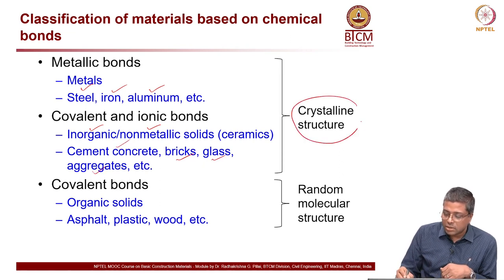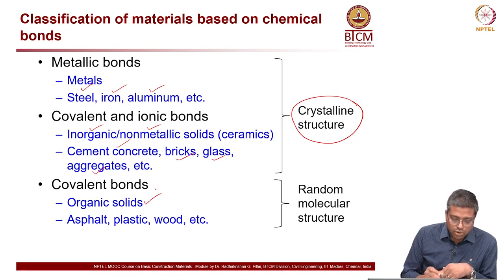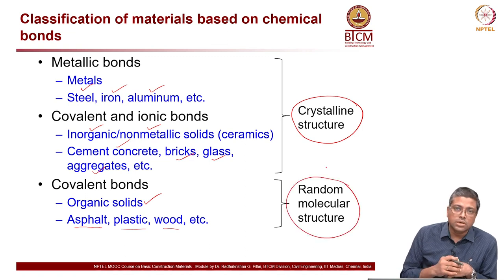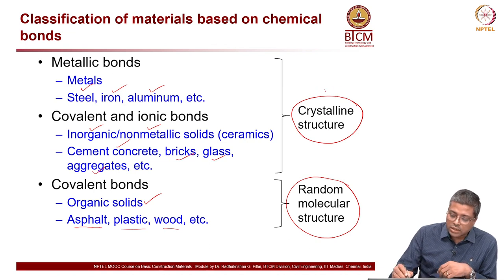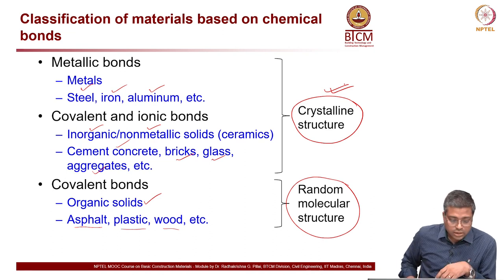In ceramics you can see crystalline structure mostly. Other types of materials are mainly organic solids — examples are asphalt, plastic, wood, etc. — where we see random molecular structure. Even though we say crystalline structure, it is not that they are perfectly crystallized, but more or less in general we can say they are crystalline in nature.